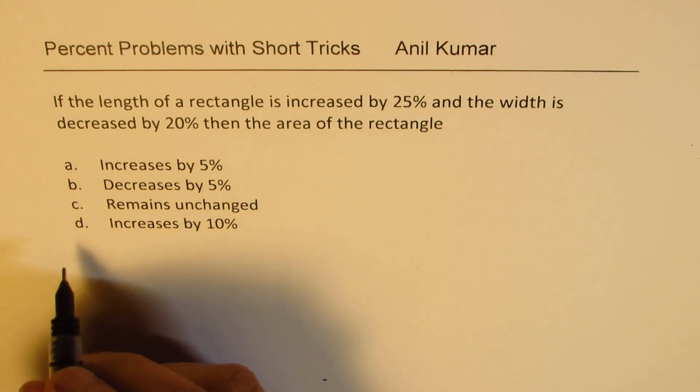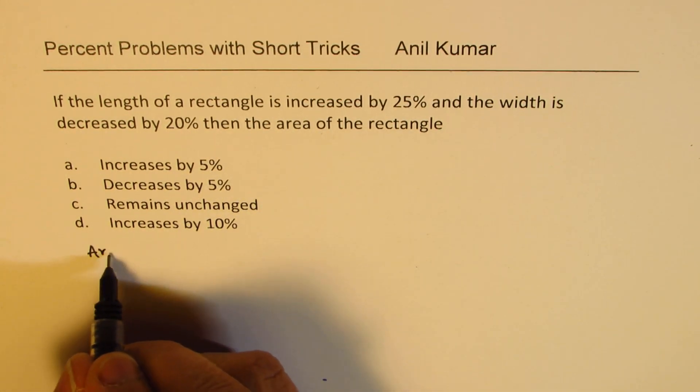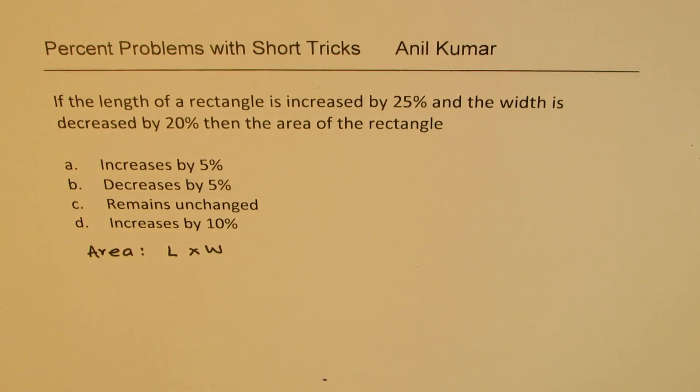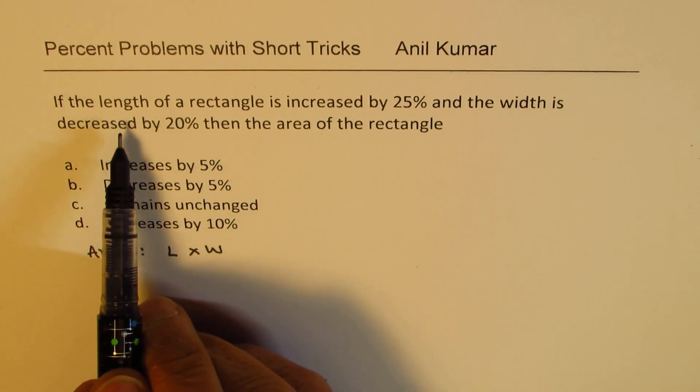If the length of a rectangle is increased by 25% and the width is decreased by 20%, then the area of the rectangle: increases by 5%, decreases by 5%, remains unchanged, or increases by 10%?